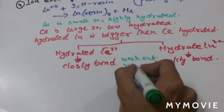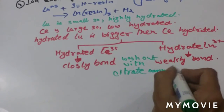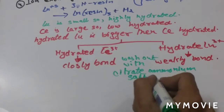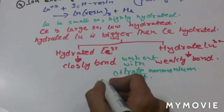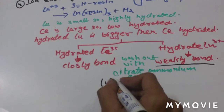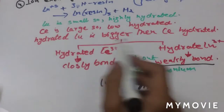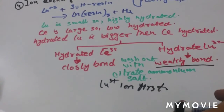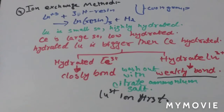When we wash with a citrate ammonium salt solution, we get lutetium eluting first because it is weakly bonded to the resin. Then cerium elutes afterward. In this way we can differentiate these lanthanides by these four methods. The fifth method is thermal decomposition of their oxy salts.